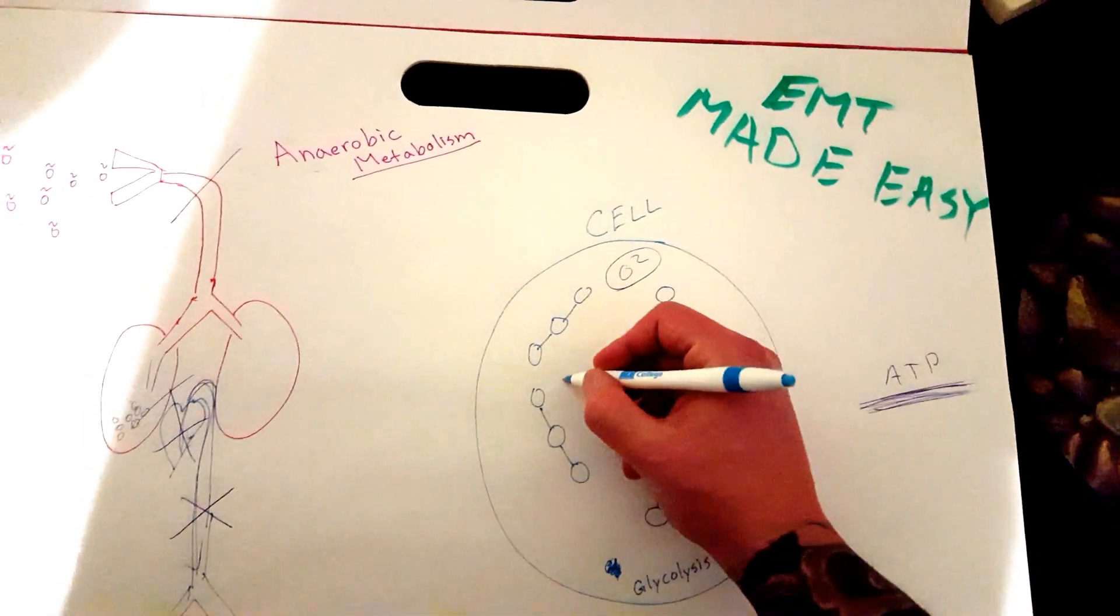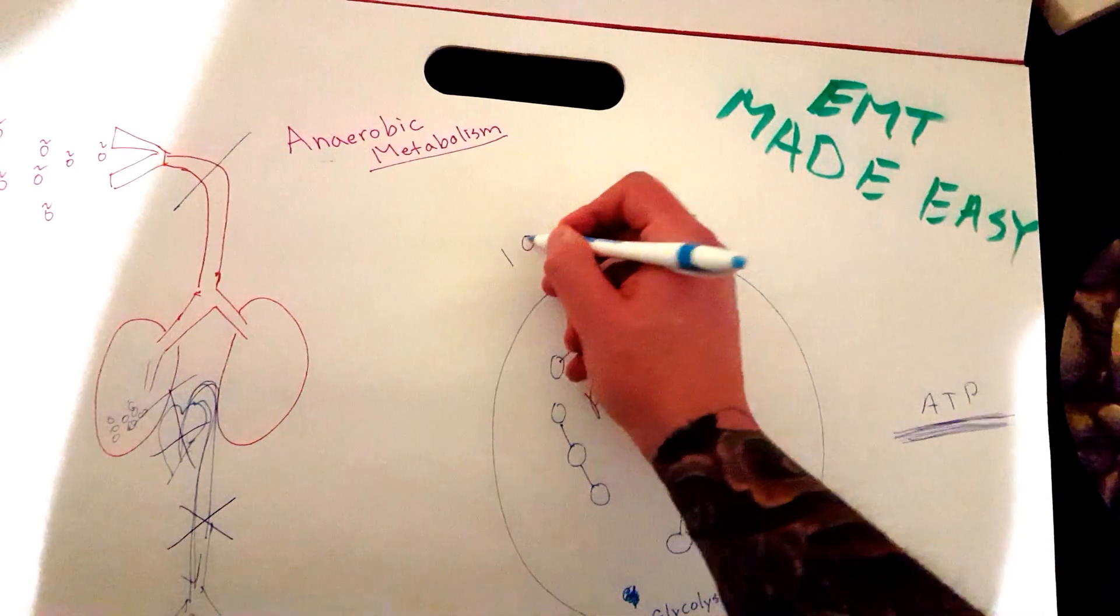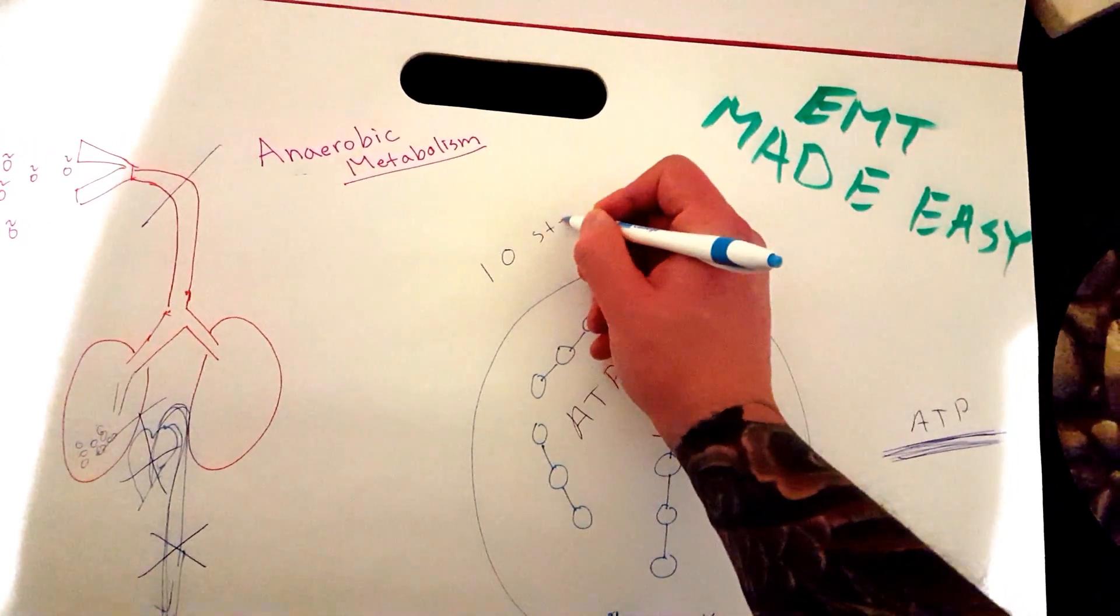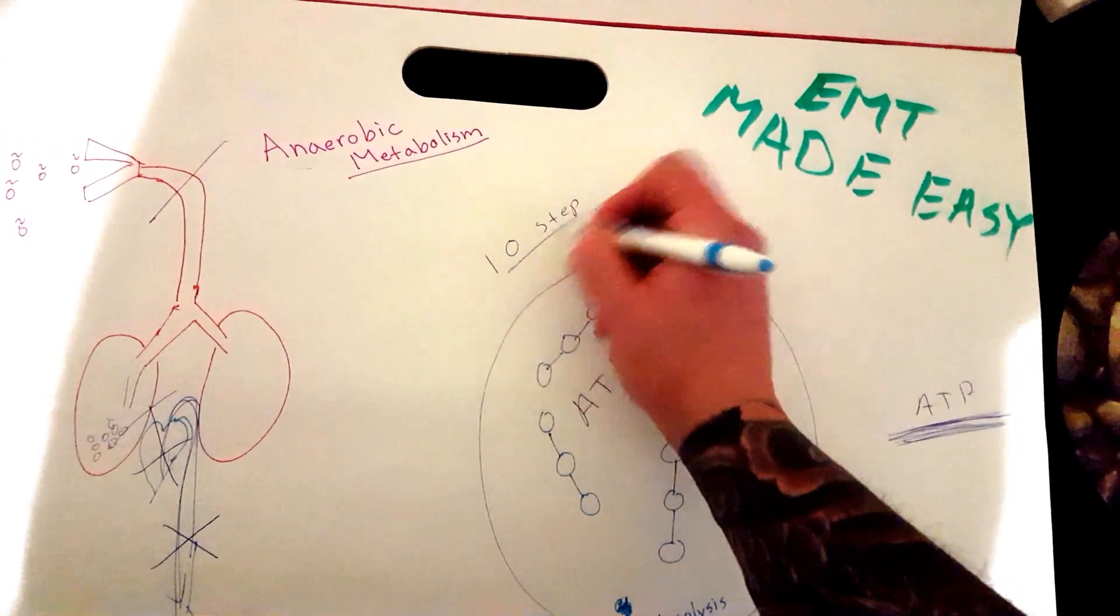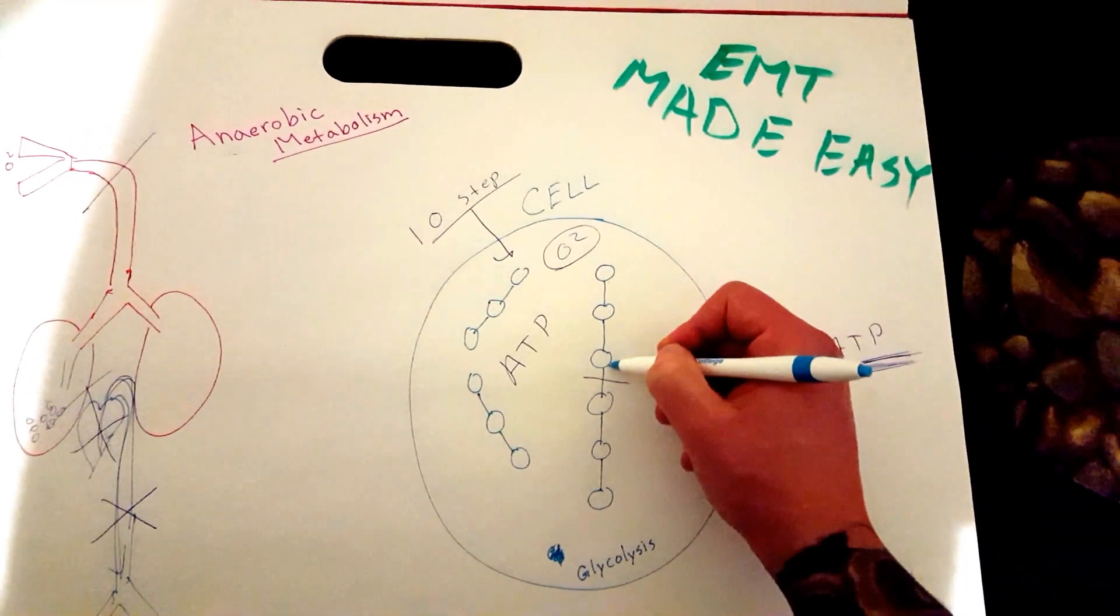So for this six carbon molecule to split into two three carbon molecules, it's actually a 10 step process. That's what I'm saying right now.